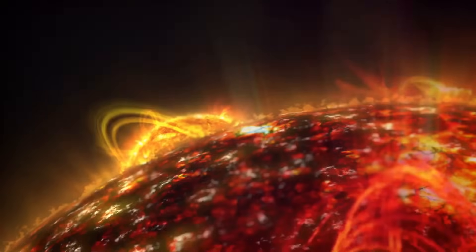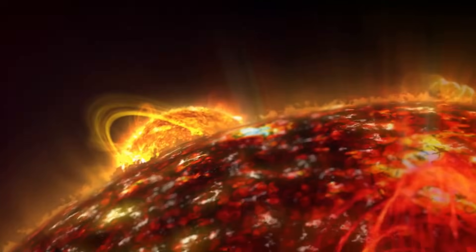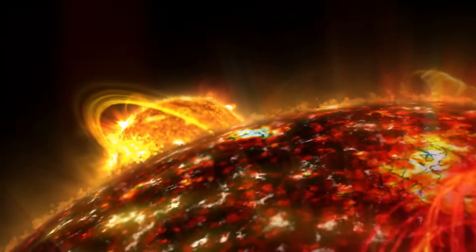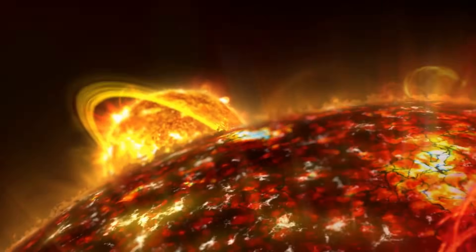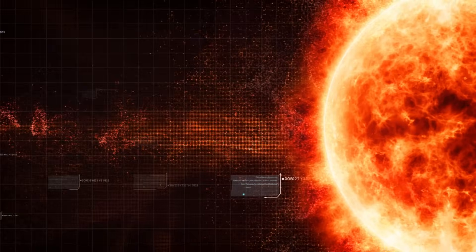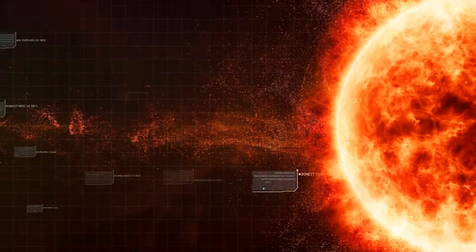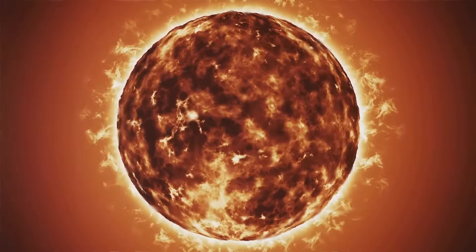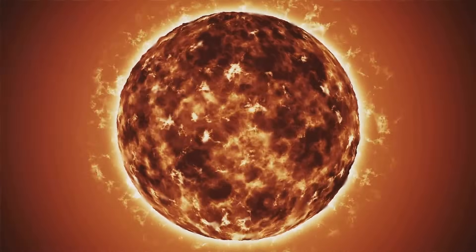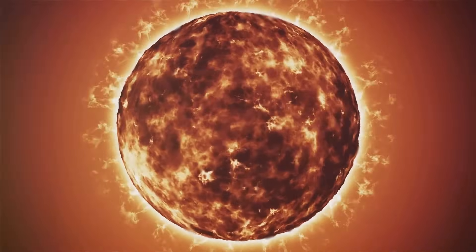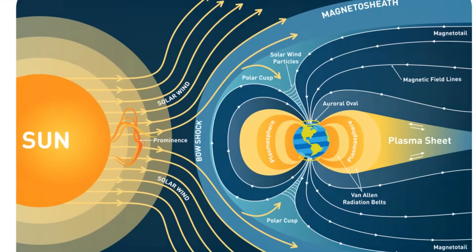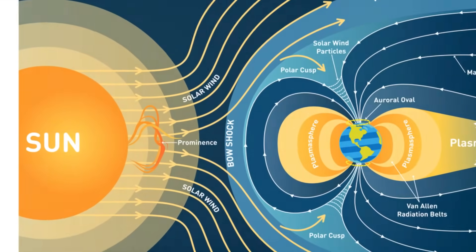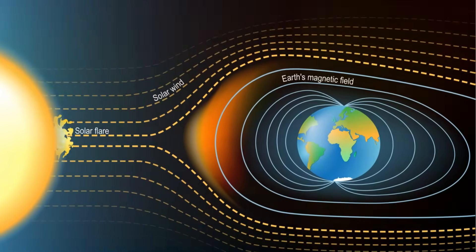The sun's surface, or photosphere, is slightly cooler at about 5,500 degrees Celsius — that's 9,932 degrees Fahrenheit. Above the photosphere lies the corona, a hot outer layer that reaches temperatures of up to 2 million degrees Celsius, or 3.6 million degrees Fahrenheit. The sun constantly emits a stream of charged particles known as the solar wind, which flows outward through the solar system.